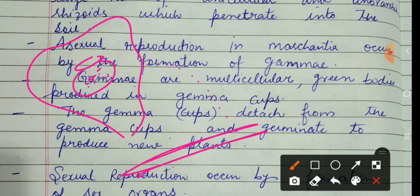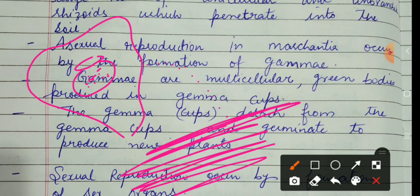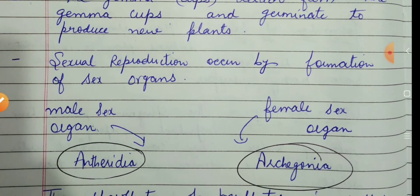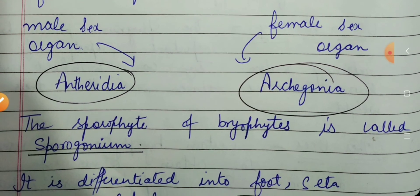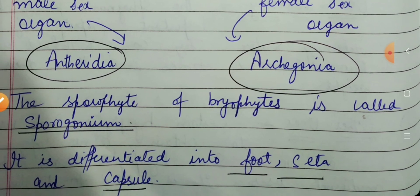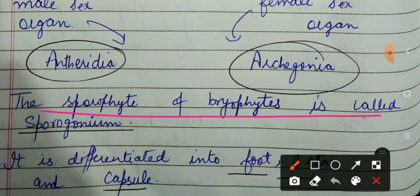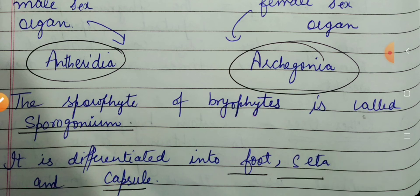Sexual reproduction occurs with the help of two sex organs — male and female. The male sex organ is the antheridium and the female sex organ is the archegonium. The sporophyte of bryophytes is called the sporogonium, which consists of a foot, seta, and capsule.